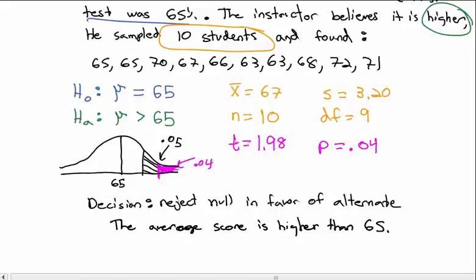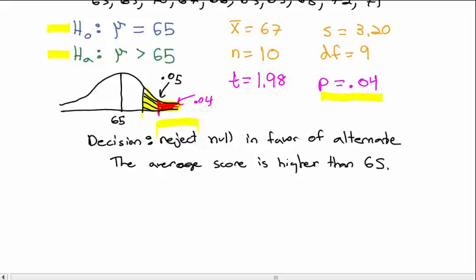Hypothesis tests all follow the exact same setup: a null hypothesis, an alternate hypothesis, an alpha value, then calculate the p-value to decide whether to reject or fail to reject. The only difference is how we calculate the test statistic — z-test when we know sigma, t-test on the calculator when we don't.